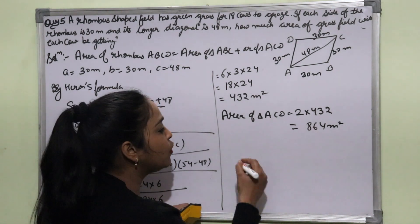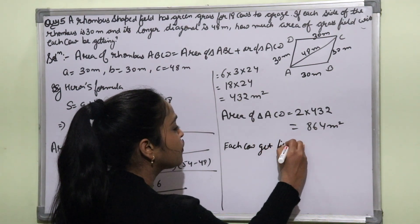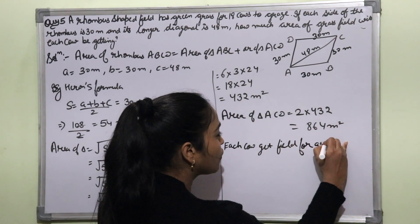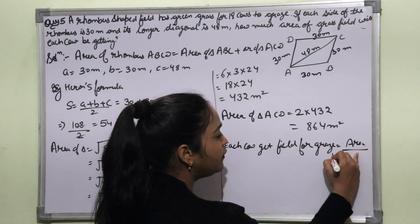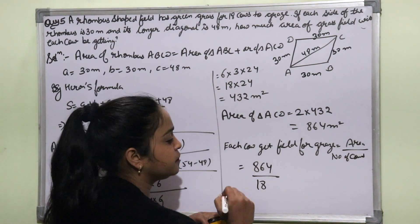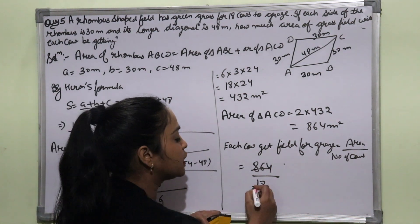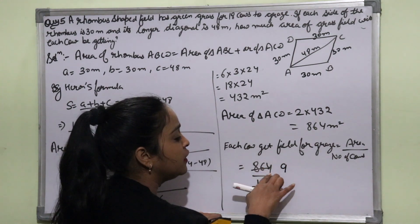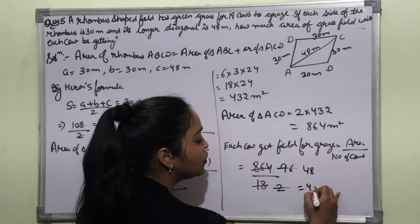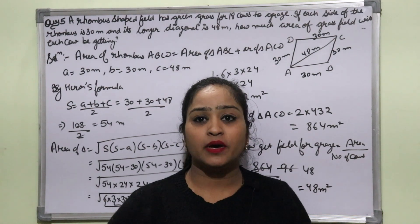Each cow's grazing area = total area ÷ number of cows = 864 ÷ 18. Dividing using the 9-times table: 864 ÷ 18 = 48 square meters. So each cow gets 48 square meters of grass to graze.